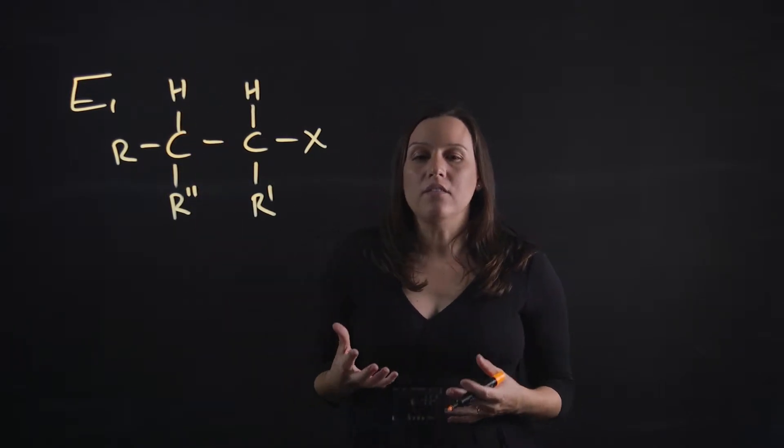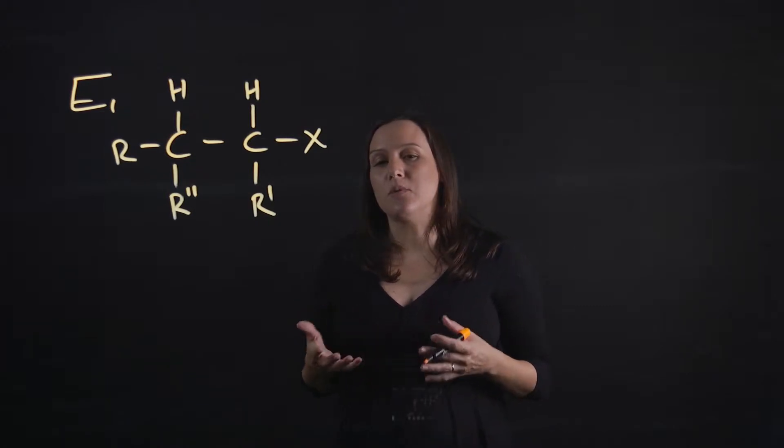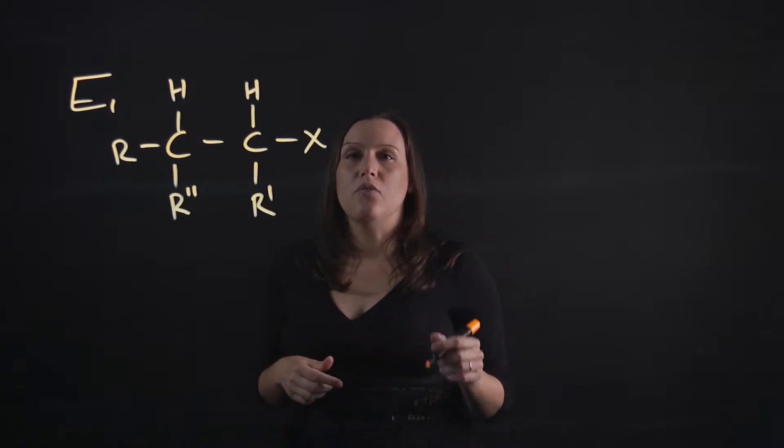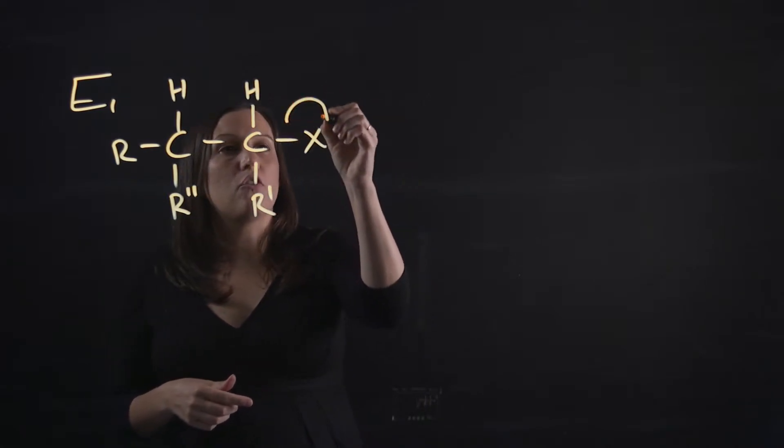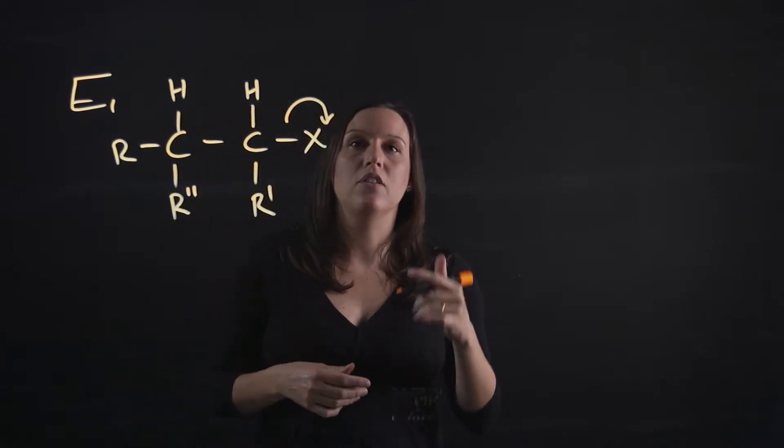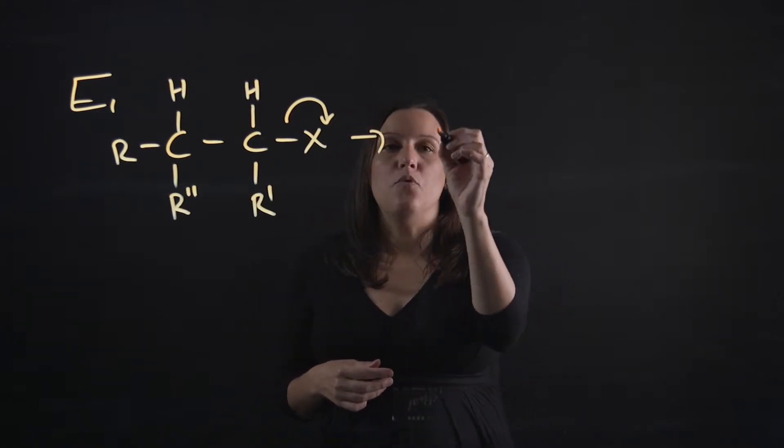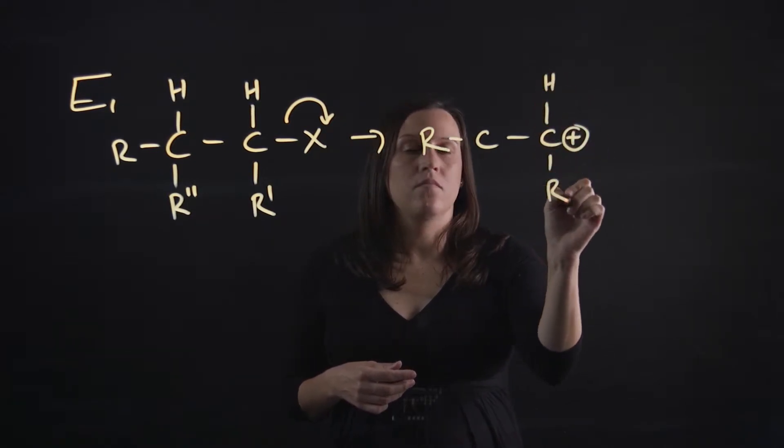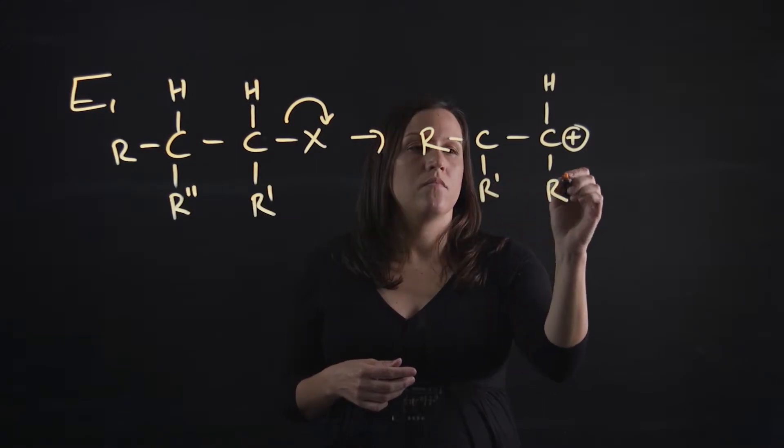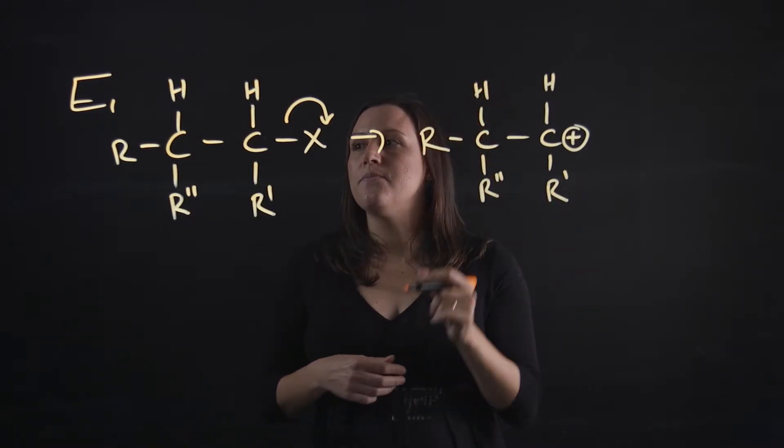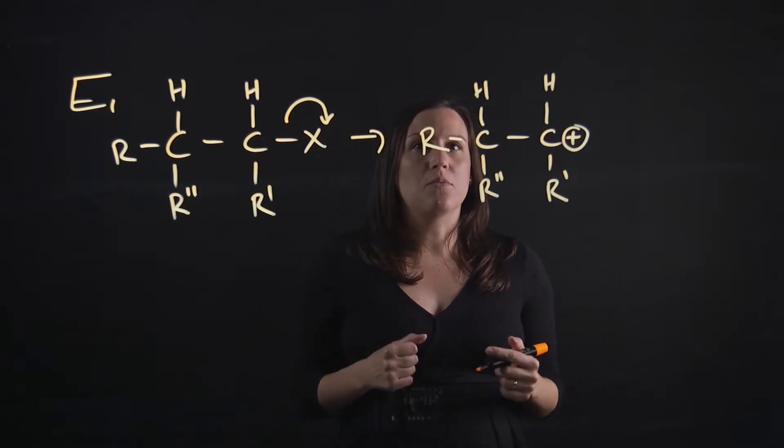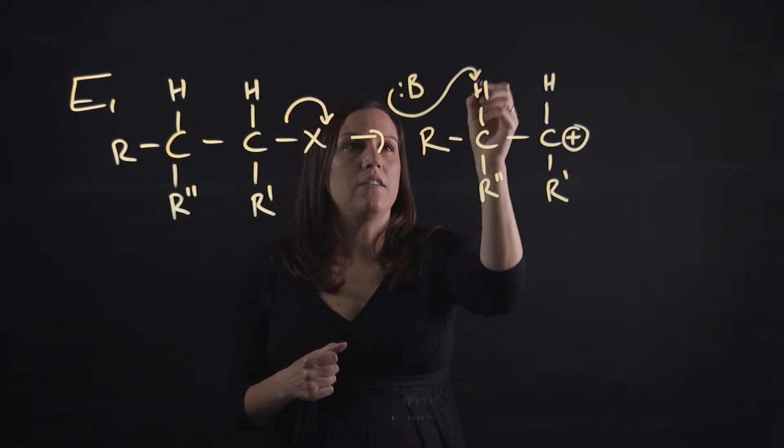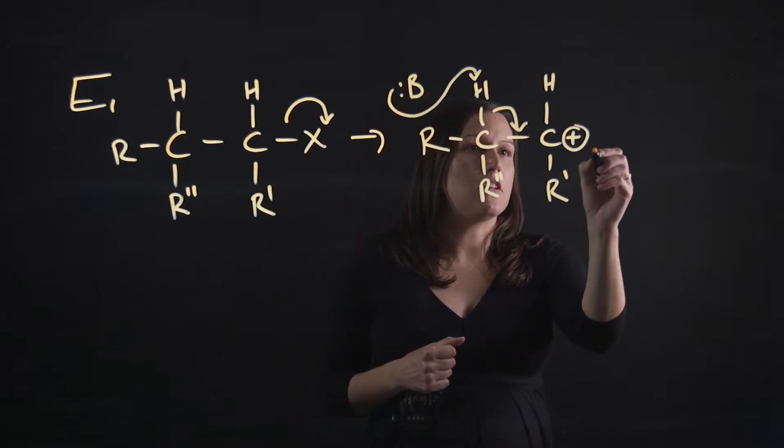With E1, with the 1 mechanisms for substitution as well, nucleophilic substitution, you have the carbocation intermediate being formed. The leaving group will leave - it has to be a very good leaving group for this to happen. Then we'll get our carbocation intermediate that's produced, and then you have your base come along and deprotonate and form the double bond, so your elimination product.